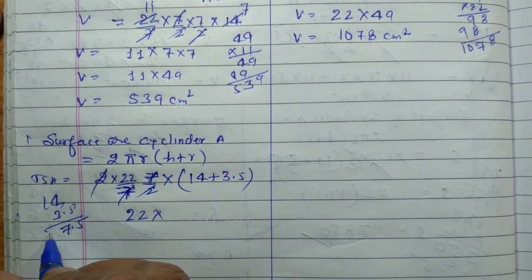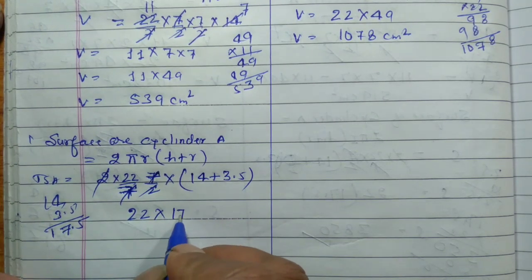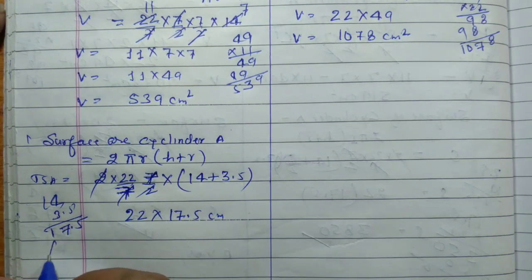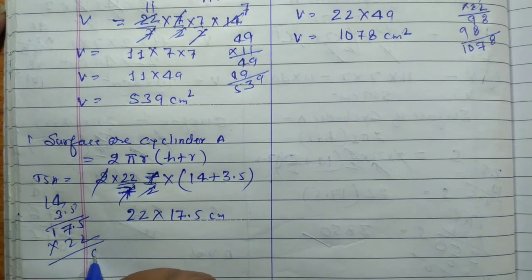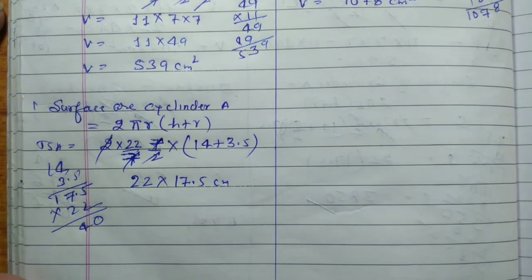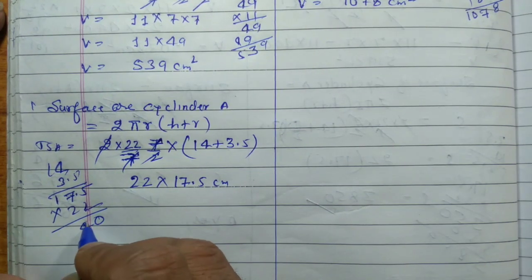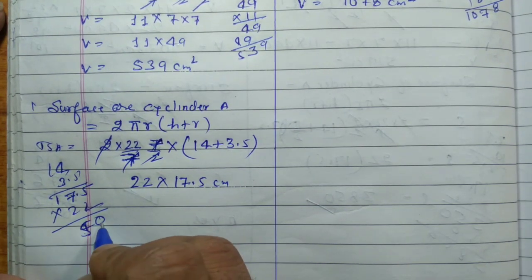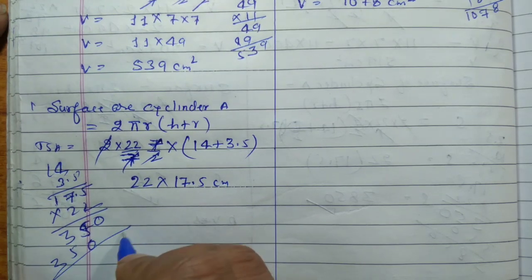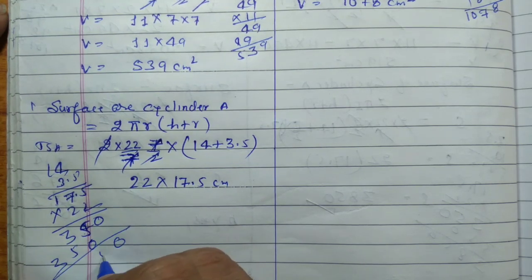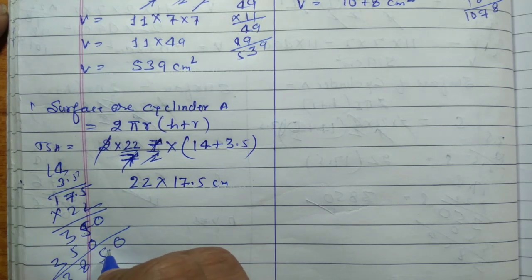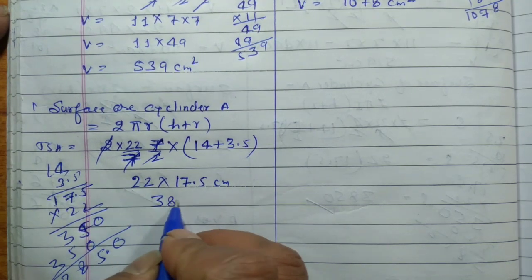Calculating: 22 × 17.5 = 385, and working through the multiplication gives the surface area of cylinder A.